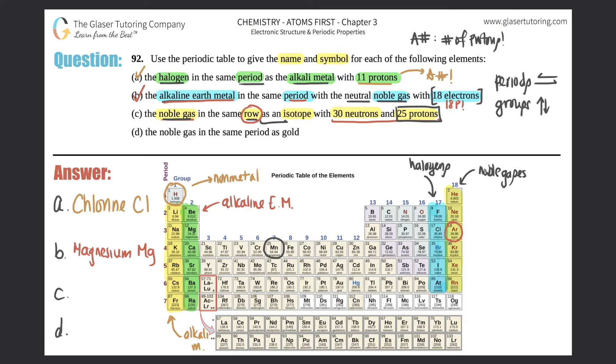They're asking which noble gas is in the same row. Remember, rows go from left to right; columns go up and down. A row is the same thing as a period. We're looking in the noble gas category, that's this group right here. Which one is in the same period, the same row? It would be krypton, number 36.